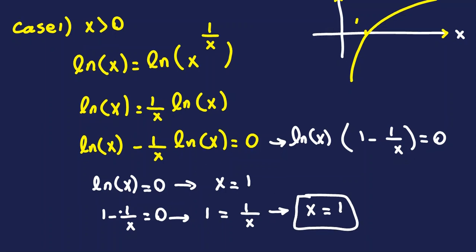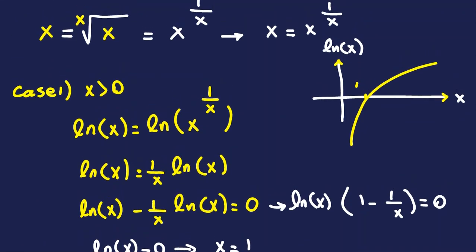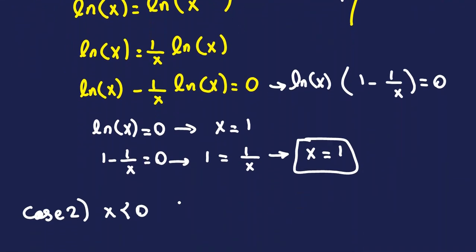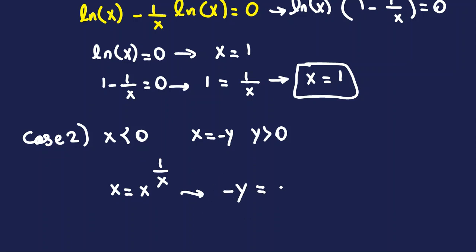Now consider Case 2: x is less than zero. The equation is still x = x^(1/x). Note x cannot be zero because that gives 1/0 or a root with index 0, which is undefined. Since x is negative, let x = −y where y is positive.